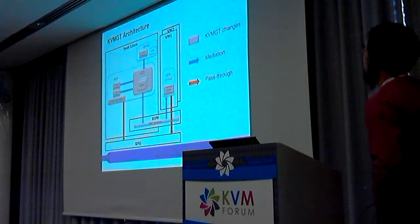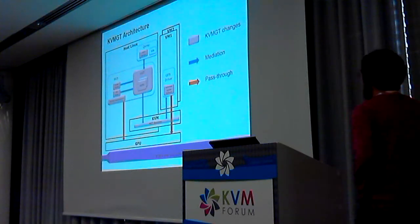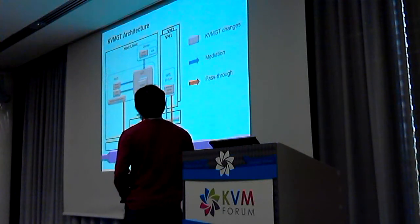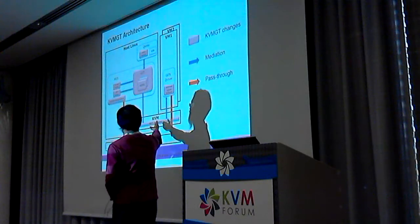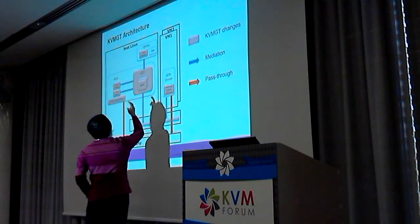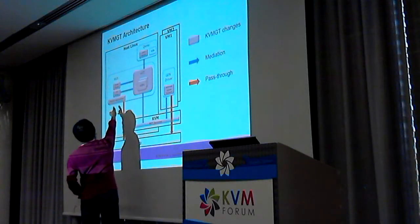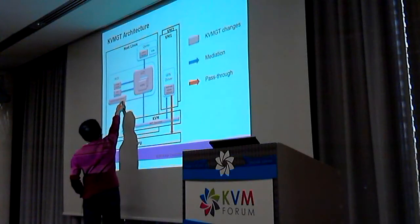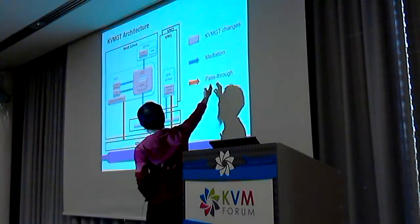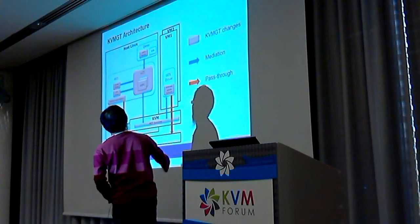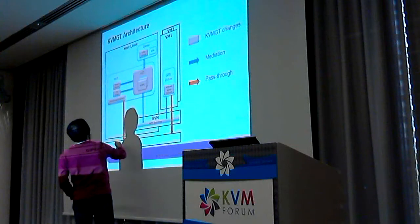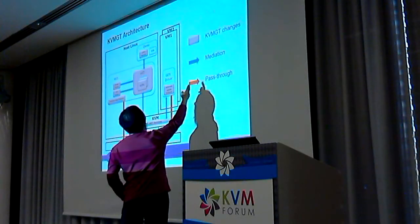Let's have a look at the QMGT architecture. As you may notice, there are several changes introduced by this project: the MPT services in QEMU, the vGPU device model, the i915 driver, changes in QEMU, and address space ballooning required by both the host and the guest drivers. Please also pay attention to the red arrows — this means direct access for VM, i.e., pass-through. For host Linux, this also means direct access. The blue arrows mean mediation.